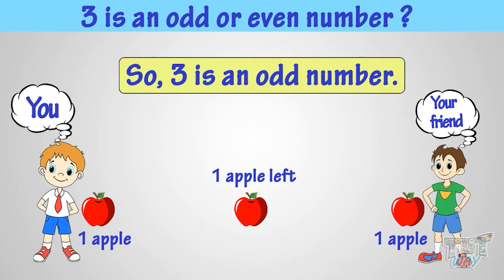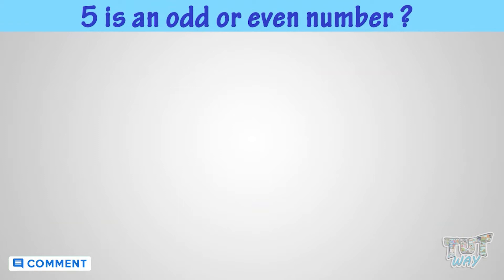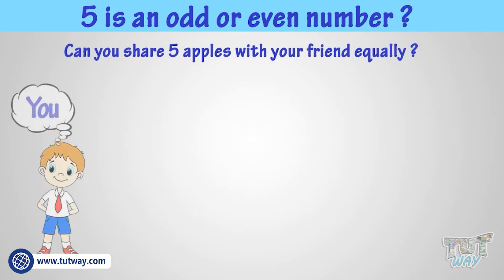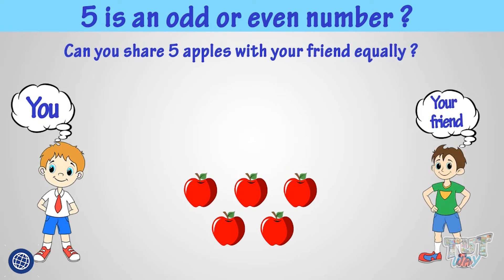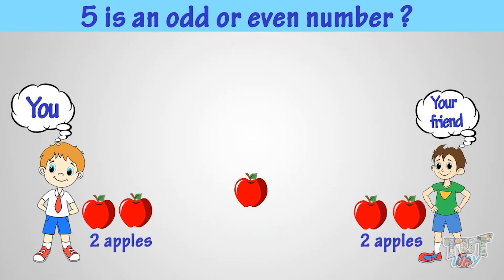Let's take another example. Let's see if five is an odd or an even number. Can you share five apples with your friend equally? Let's try. Oh, you can't, as one apple is left. So five is an odd number, or five apples are odd number of apples.